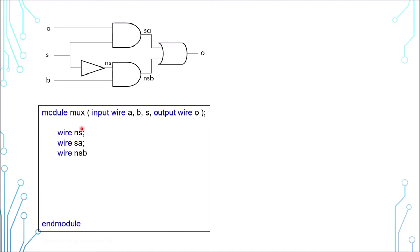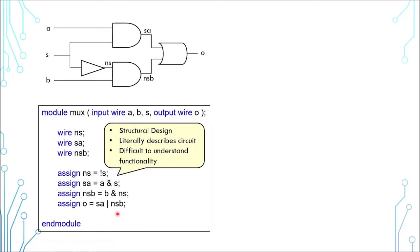There are three internal wires here, here and here. The rest of the code is to connect all the wires together. This coding style is called structural design. It is literally describing the circuit, gate to gate, connection to connection. The downside of this code is that it is difficult to understand what the design intention is.